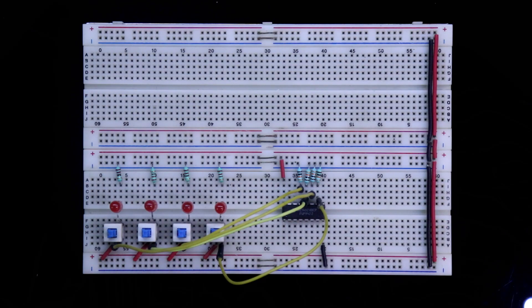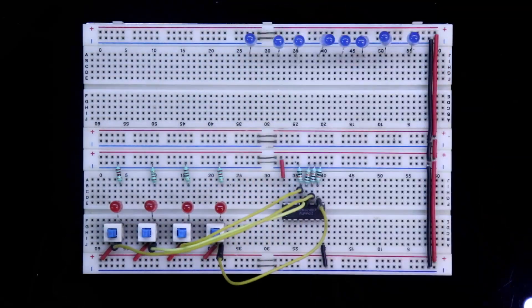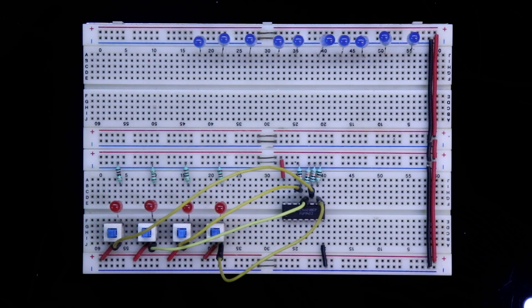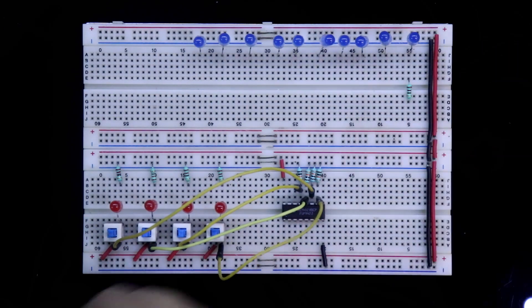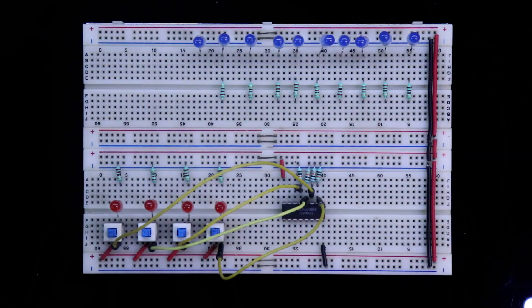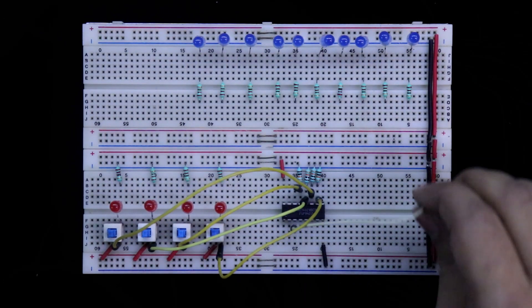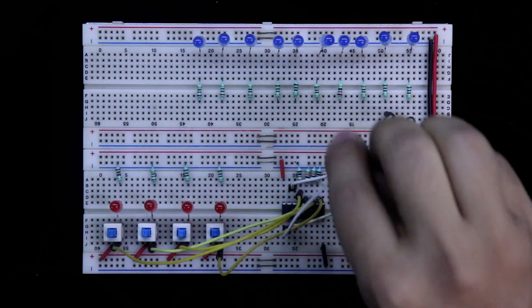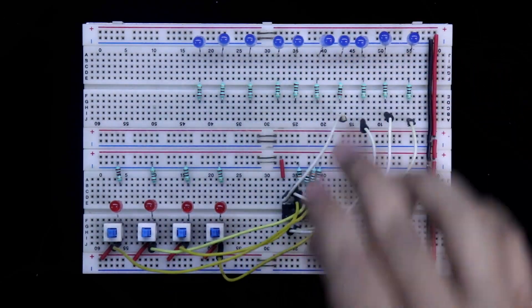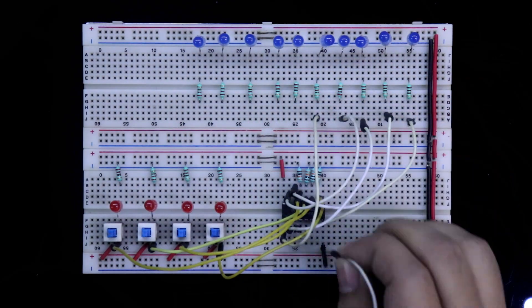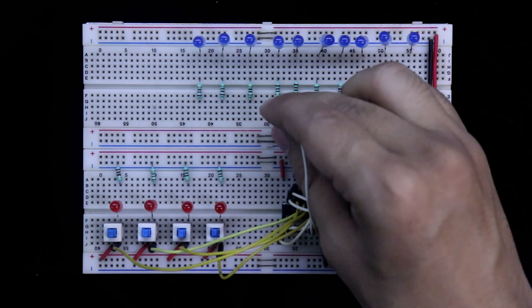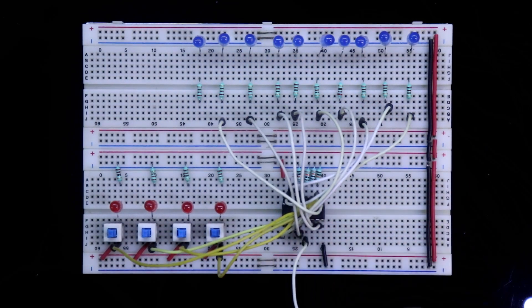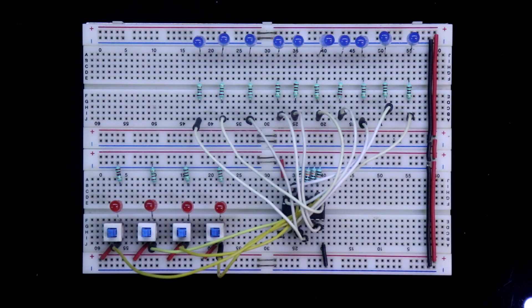Now we have to connect the output. The negative pin of the LED is connected to the negative rail. These are 10 outputs, LED 0 to LED 9. With the positive pin of the LED, we have to connect 220 ohms resistor. Pin 3 is Q0, so it is connected to the first LED. Pin 14 to second LED. Pin 2 to third LED. Pin 15 to fourth LED. Pin 1 to fifth LED. Pin 6 to sixth LED. Pin 7 to seventh LED. Pin 4 to eighth LED. Pin 9 to ninth LED. Pin 5 to tenth LED. So this is how we have completed our connection.